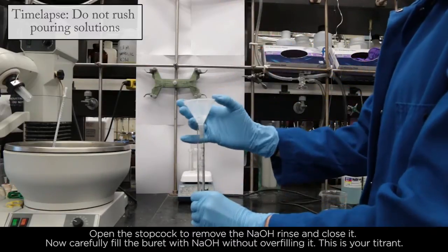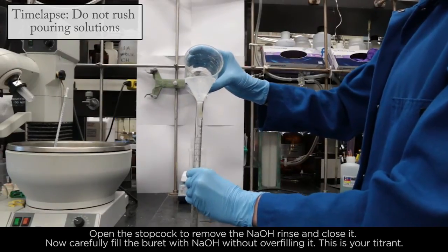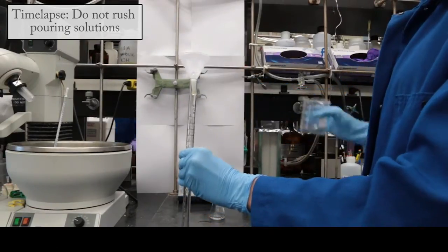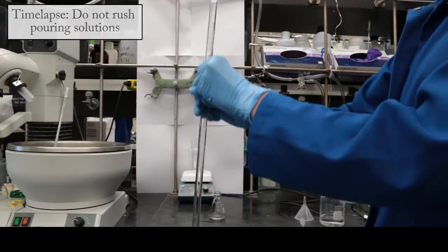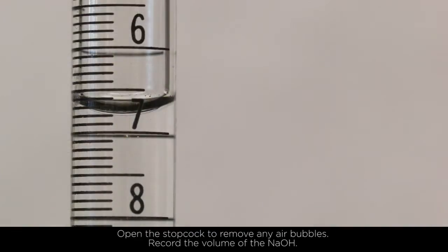Now carefully fill the burette with NaOH without overfilling it. This is your titrant. Open the stopcock to remove any air bubbles. Record the volume of the NaOH.